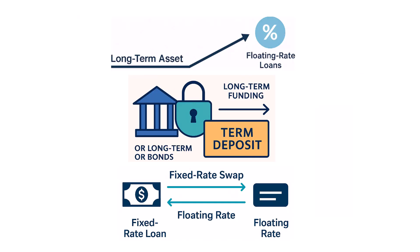So if banks tend to borrow short-term and lend long-term, how can they get their assets and liabilities to reprice together to help eliminate that interest rate risk? They can reduce the gap in three basic ways. First, they can offer more floating rate loans, so as yields rise, so do their earnings on their assets. Second, they can lock in longer-term funding — think of CDs where they're locking up that capital for a longer period of time. And third, they can use interest rate swaps to convert fixed-rate loans into floating exposure.